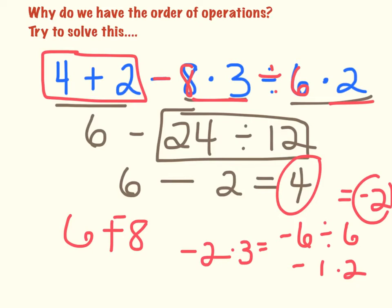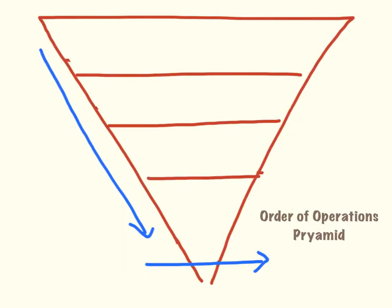Somebody else could do it yet another way. So the reason we have order of operations is so that we all solve problems the same way and end up with the same answer — it's kind of like a set of rules. What I like to draw is something called the order of operations pyramid. In previous years you might have had PEMDAS — 'Please excuse my dear aunt Sally' — but we're going to be adding more to that, so from now on we'll use this pyramid instead.